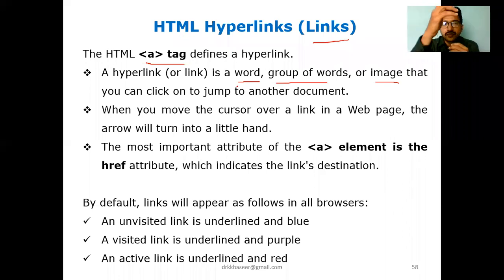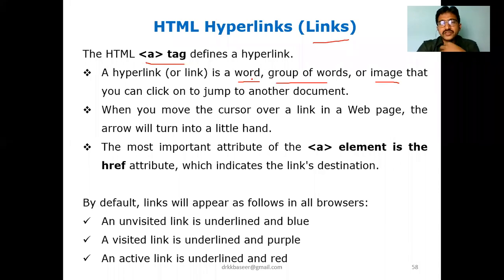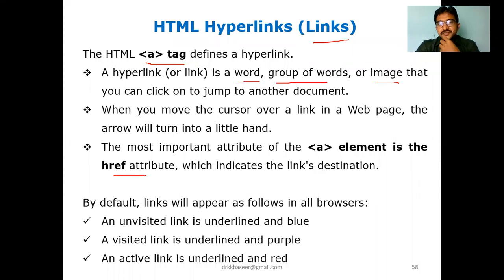Hyperlinks can be given for a word, a group of words, or an image. Whenever you click on a particular word, it will automatically open the link you have navigated to. Whatever address you give for this hyperlink will open when you click. We use the href attribute to represent the address or path which the link has to open.